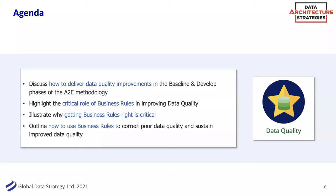We're going to talk about methodology — how do you baseline data quality, know where you are, and know where you want to go. In this session we're particularly going to talk about business rules, which I think is an unsung hero in the data management world. They're embedded in a lot of other things you might use — a data profiling tool, a master data management tool, or a data model — and yet they're ubiquitous and often very critical to the success of getting data quality right.